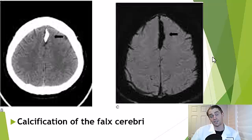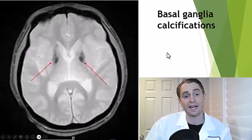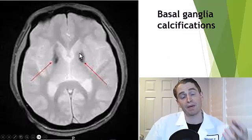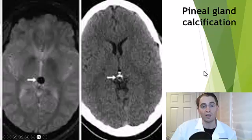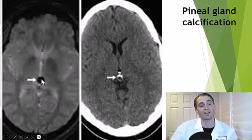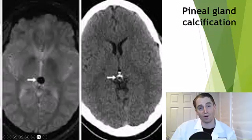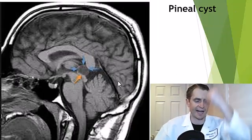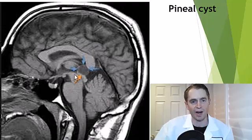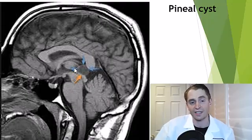Sometimes the calcification can be quite impressive, as in this image. It's also common to have calcification in the area of the basal ganglia — that's often very symmetrical — and in the pineal gland. You can also have cysts of the pineal gland. You're looking at sagittal images; here is the midbrain, and immediately above that is the pineal gland cyst.